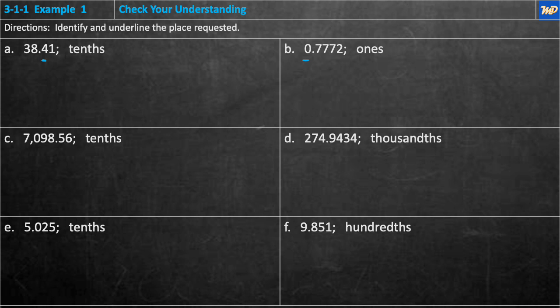C: 7,098.56 — underline the tenths. The tenths is the first place to the right of the decimal point, so it's the 5. D: 274.9434 — underline the thousandths place. Starting from the decimal: tenths, hundredths, thousandths — the 3 is the thousandths place.